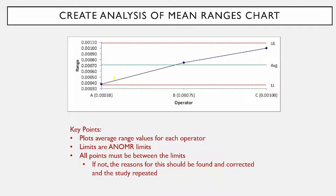The next thing you do is create an analysis of mean ranges chart. What you're doing is plotting the average range for each operator on this chart. Again you're going to have limits — these are analysis of mean range limits, interpreted similarly to control charts. All points have to be between the limits; if not, the reasons should be found and corrected. These charts give you an idea about whether or not the measurement system is consistent and predictable.